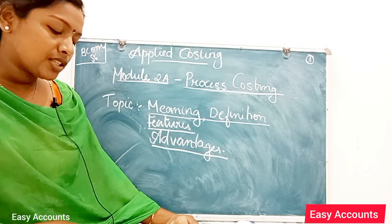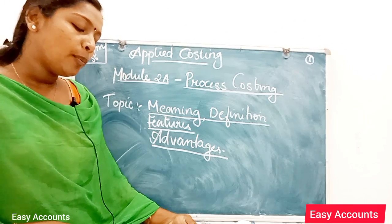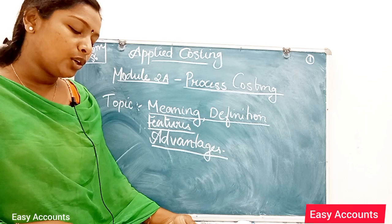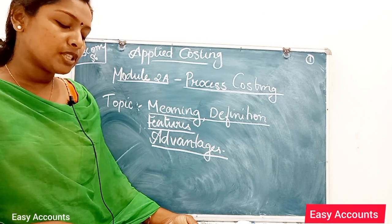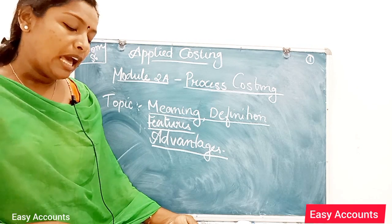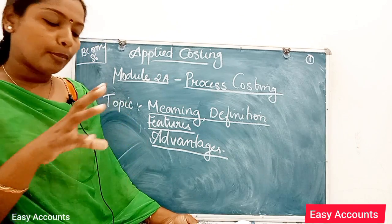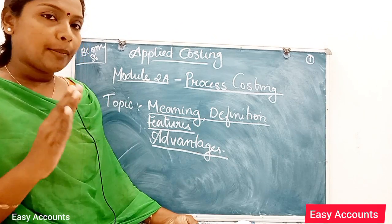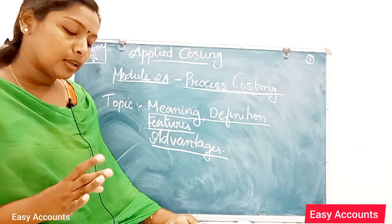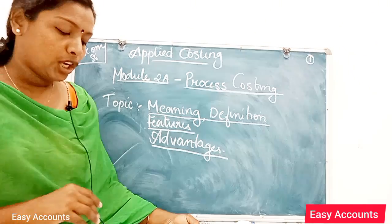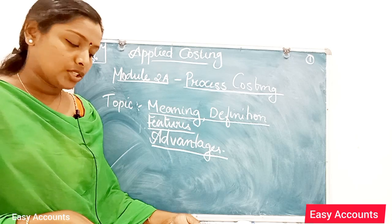Distinct stages of production: the factory or the whole production activities are divided into departments or processes, which are limited to some specific operations.